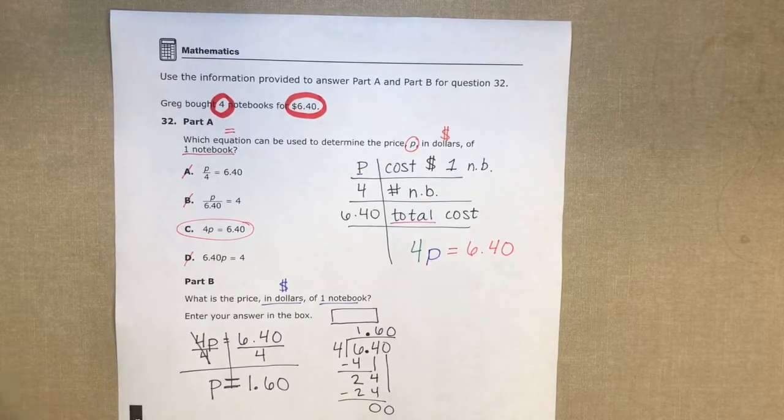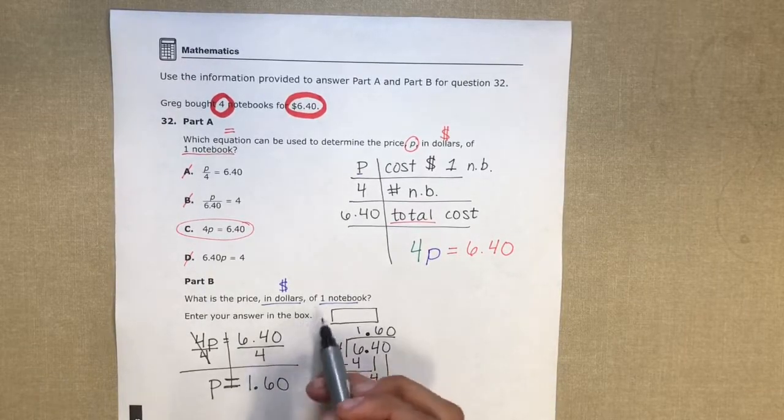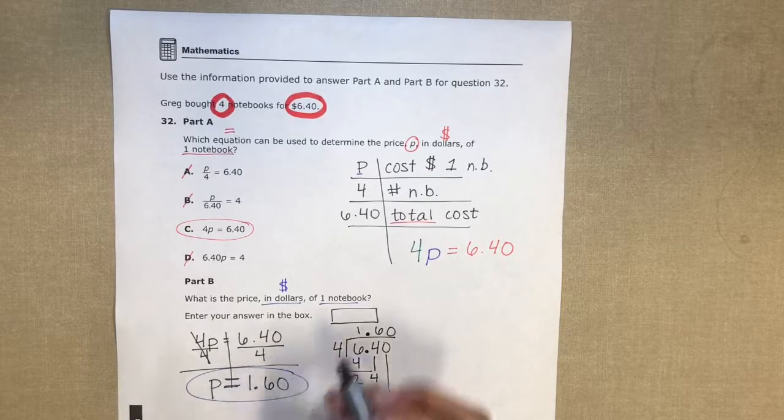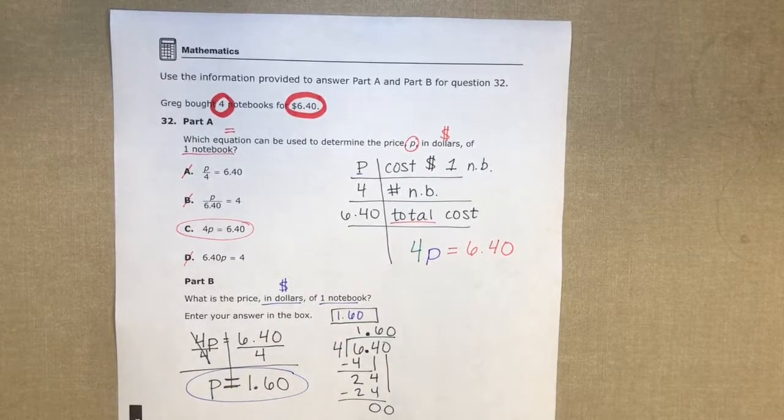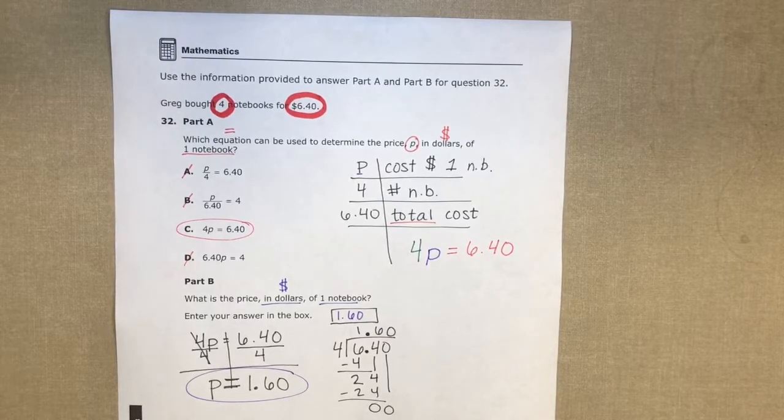So that means the cost of one notebook is one dollar and sixty cents. Now you can double-check your work, which is always a good idea, and I got 640, which means that I am correct.